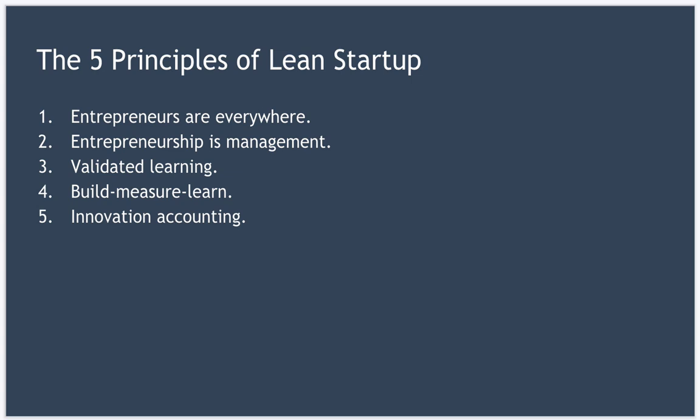The third principle is validated learning — the job of your startup is to learn what your customers want in such a way that you can build a sustainable business. The fourth principle is Build, Measure, Learn, and this loop is the fundamental activity of a startup. Iterating through this loop helps you learn — the faster you iterate through it, the faster you learn and make progress. And finally, we have innovation accounting, which gives you the tools to measure if your startup is making progress.